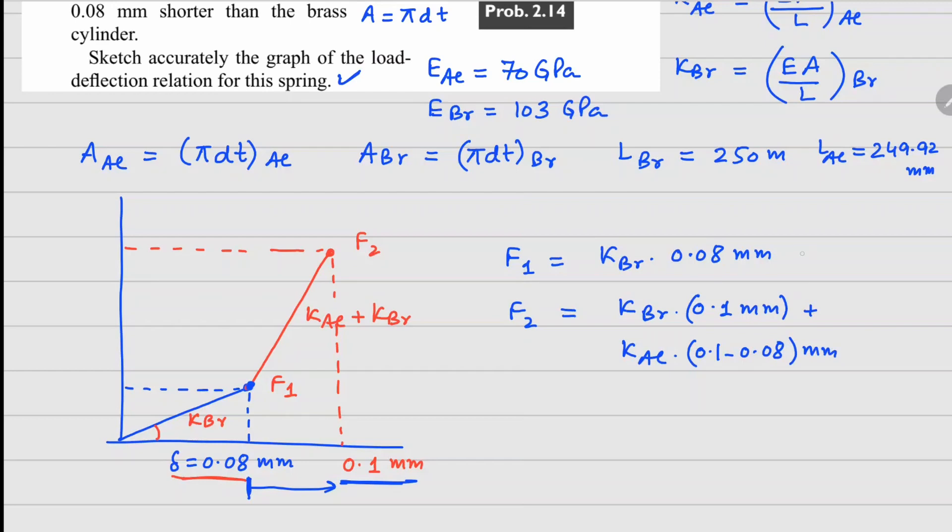So if you do these calculations, your F1 value is 97.08 and your F2 value is 148.88 kilonewtons. So that's the complete curve. This is plotted in kilonewtons right here. This one is 148.88 and this one is 97.08.